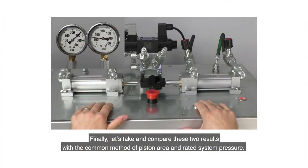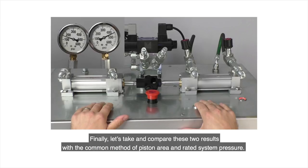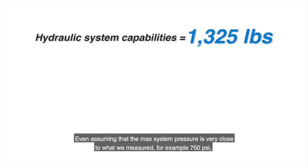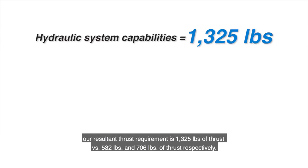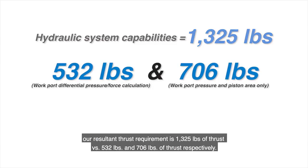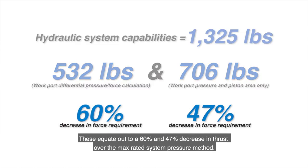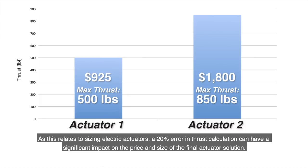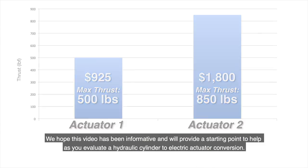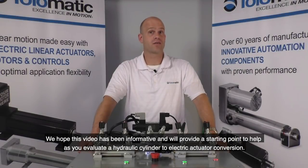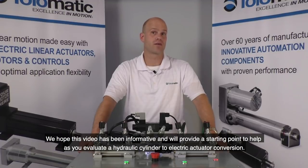Finally, let's compare these two results with the common method of using piston area and rated system pressure. Even assuming that max system pressure is very close to what we measured — for example, 750 psi — the resultant thrust requirement is 1,325 pounds, versus 532 pounds and 706 pounds respectively. These equate to a 60% and 47% decrease in thrust over the max rated system pressure method. As this relates to sizing electric actuators, even a 20% error in thrust calculation can have a significant impact on the price and size of the final actuator solution.